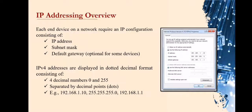Now we go to our last topic: IP addressing. Each end device on a network — whether it be a PC, laptop, server, printer, VoIP phone, security camera, etc. — requires an IP configuration. IP configuration consists of an IP address, subnet mask, and a default gateway (default gateway is optional). IPv4 addresses are displayed in dotted decimal format consisting of four decimal numbers from 0 to 255, separated by decimal points or dots.